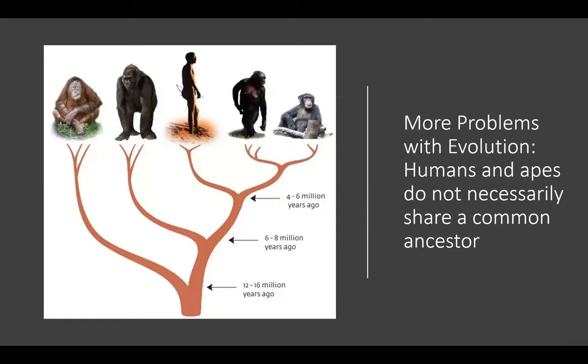Yet another problem with evolution is that humans and apes do not necessarily share a common ancestor. There are actually several competing theories about the evolution of humans, and given the different problems with the fossil record and with dating fossils, there is no certainty about how humans evolved from previous life forms. So if you ask evolutionists which common life form we actually evolved from, you will find that they can't answer that question consistently, because they will have different answers.